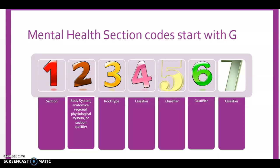Mental health codes start with the character G. The second character position is for body system, anatomical region, physiological system, or section qualifier, and in the mental health section our character for the second value is always Z for none. Our third character is the root type and it represents the specific service provided, such as psychological testing, counseling, family psychotherapy, individual psychotherapy, crisis intervention, electroconvulsive therapy, biofeedback, or other mental health conditions.